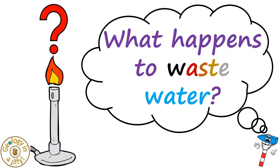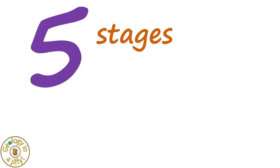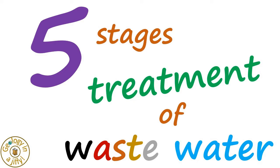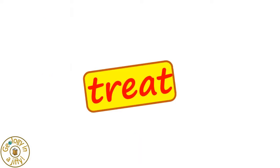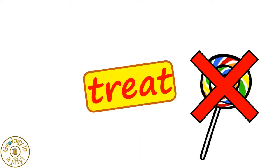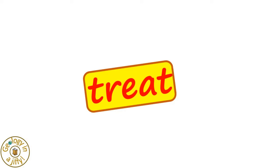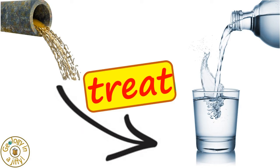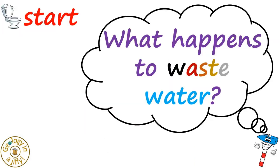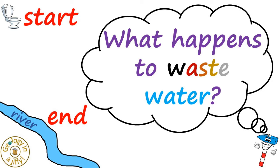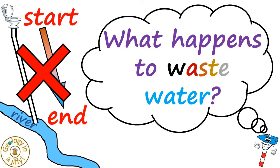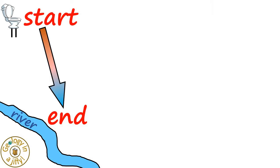What happens to waste water? There are five stages in the treatment of waste water. When we say treat, we don't mean having a lolly for being good. We mean treat so as to make this dirty, disgusting mixture cleansed and turned into, ideally, drinkable water. Many think that the journey starts at a toilet and ends in a river, the waste directly moving between the two, maybe in one long sewer pipe. But no, the waste water goes on a much more complex journey.